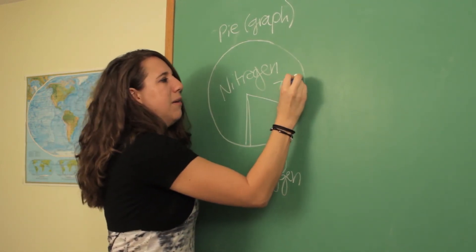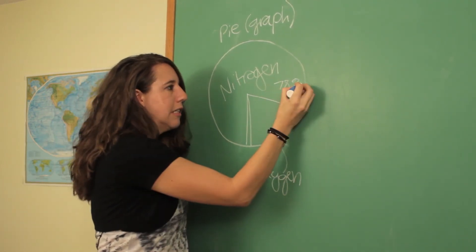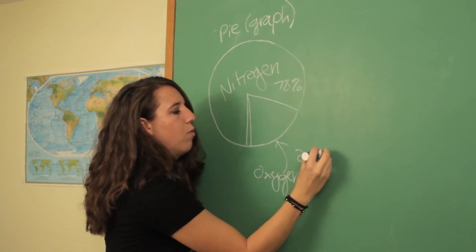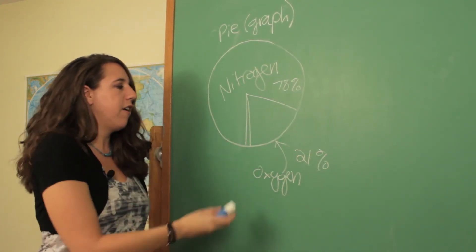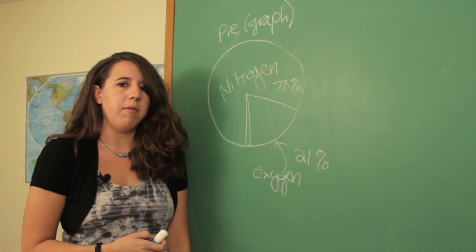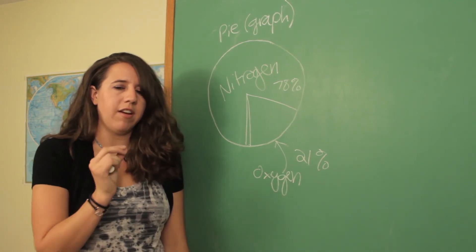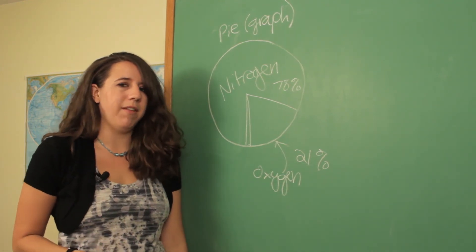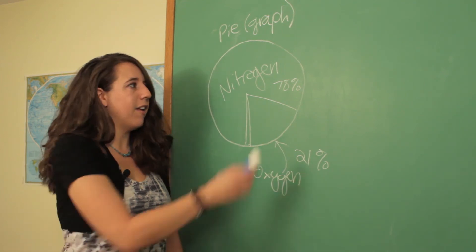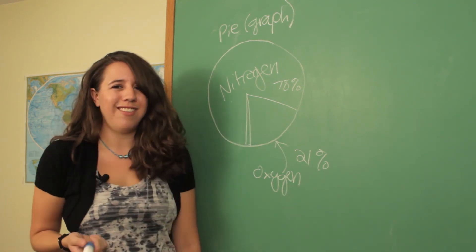This is about 78% of our atmosphere. This is about 21%. And the other 1% is argon and a bunch of other random, very, very tiny percentages of other elements. But mostly all you need to worry about is the nitrogen and of course the oxygen.